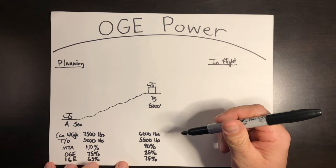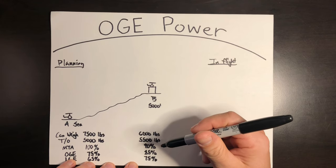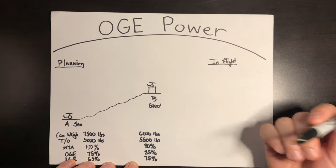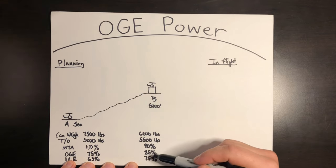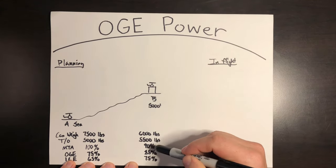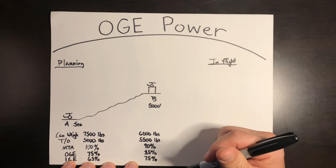So there are a few ways that I can validate my OGE power to see if I even have OGE power before I take off. First, OGE power required is less than max torque available. Here at sea level, 75% is less than 100. Yep. And at this altitude, 85 is less than 90. Yep. That both checks out. That validates that I do have OGE power.